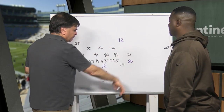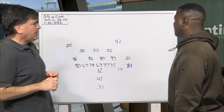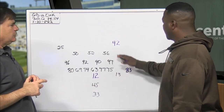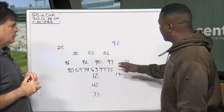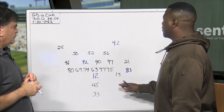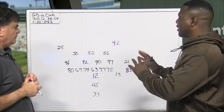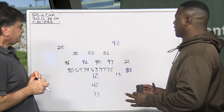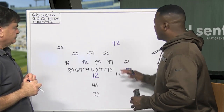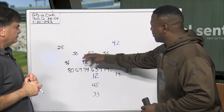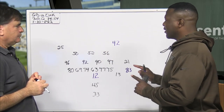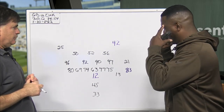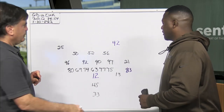Everything's really tight to the hashes. The reason why you bring the receivers in is so they can get a good block on the receivers and corners if you're trying to do some kind of misdirection. That's what this offense is all about — misdirection and deception — just to make these linebackers think a little bit or take one wrong step. You've got to really think when you're playing this offense.